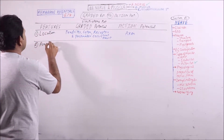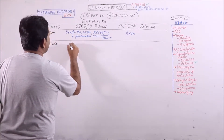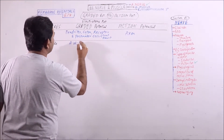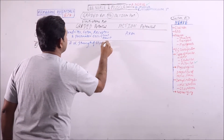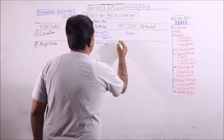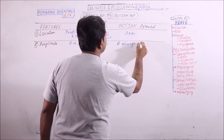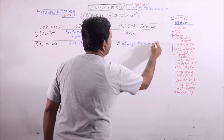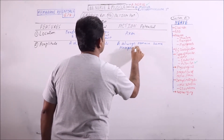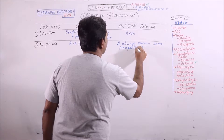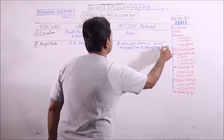Amplitude. In case of graded potential, amplitude is directly proportional to the strength of stimuli. Here, for action potential, the amplitude always remains the same irrespective of the strength of stimuli.